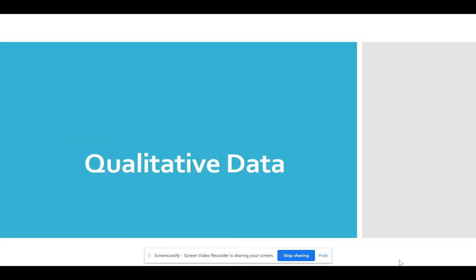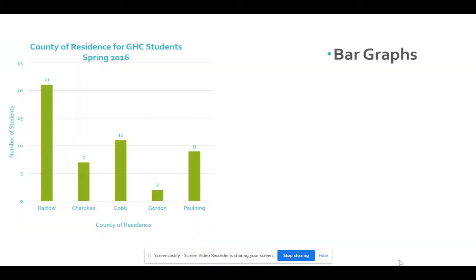So we're going to focus on qualitative data first. Remember, qualitative data is words and phrases primarily. It can be numeric in the sense that it's labeled, a label. So one of the more common types of graphs that is used with qualitative data is a bar graph.